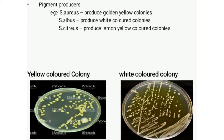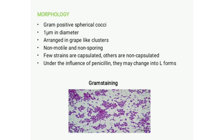Most staphylococcal strains are pigment-producing, meaning they can produce pigment on solid media. Staphylococcus aureus isolated from pyogenic lesions produces golden yellow colonies, while Staphylococcus albus (normal skin flora) produces white colonies. Another species, Staphylococcus citreus, produces lemon yellow colonies on solid media.